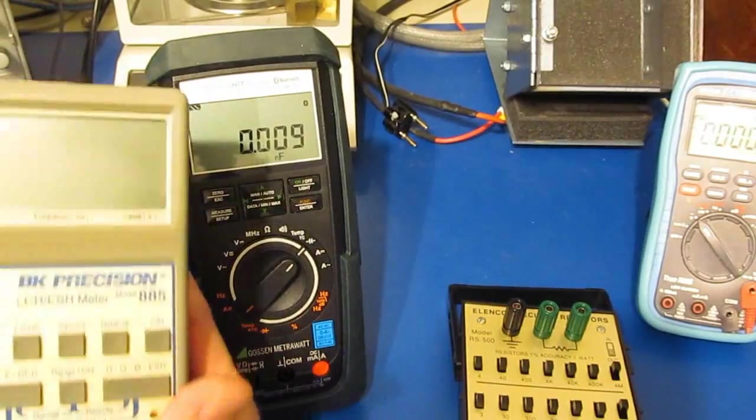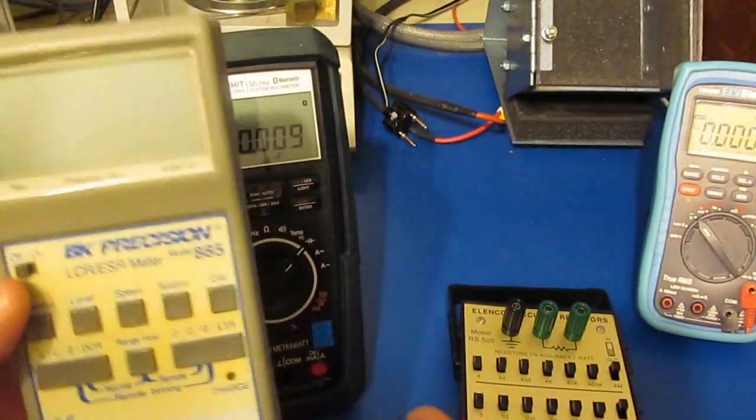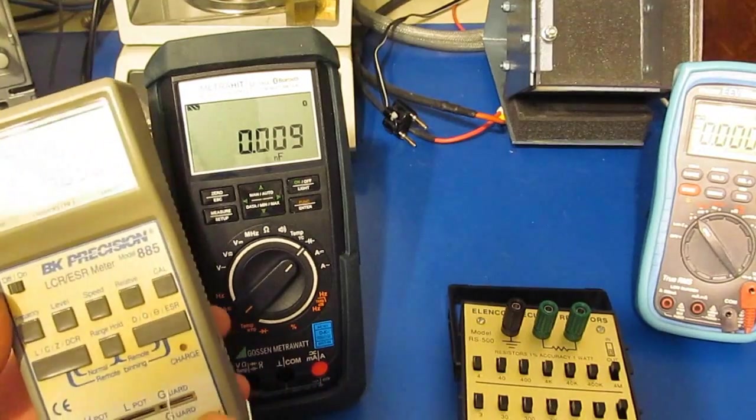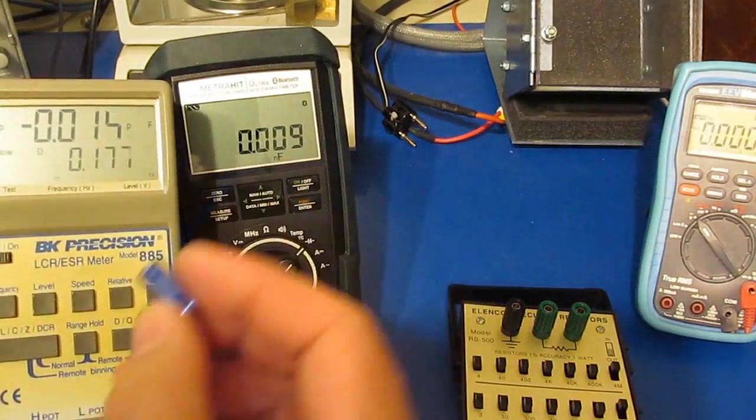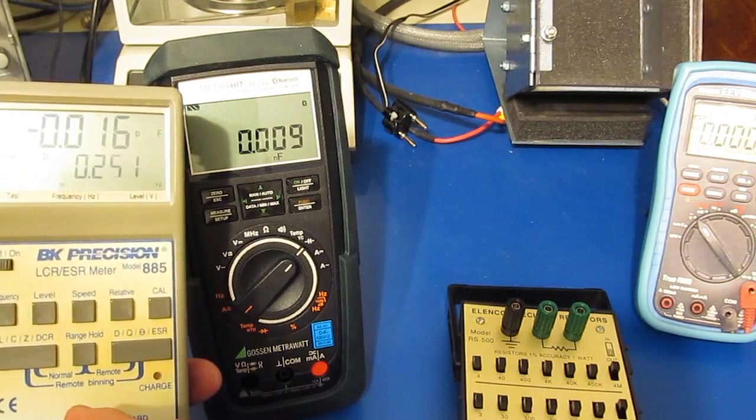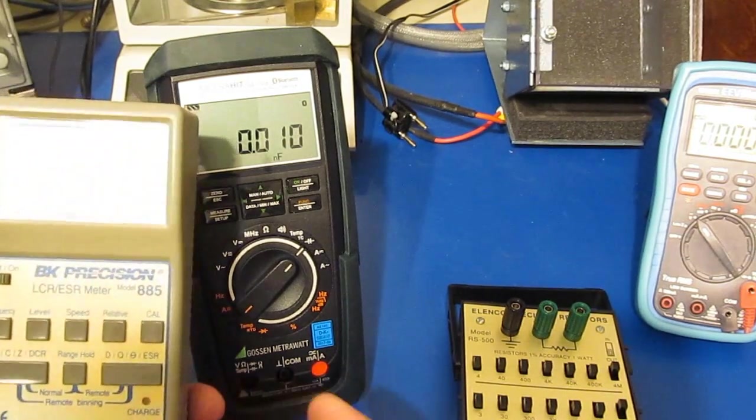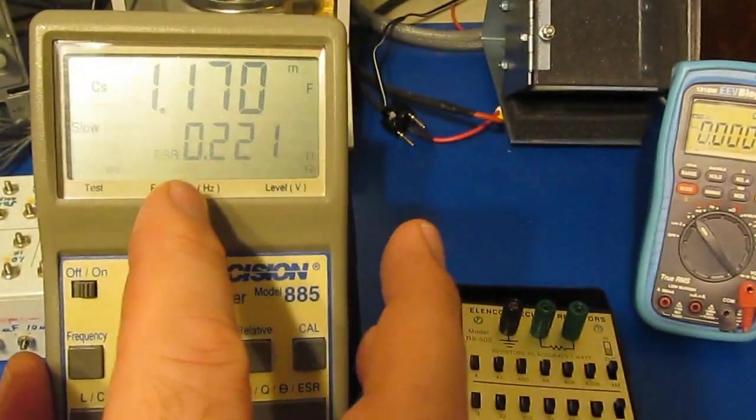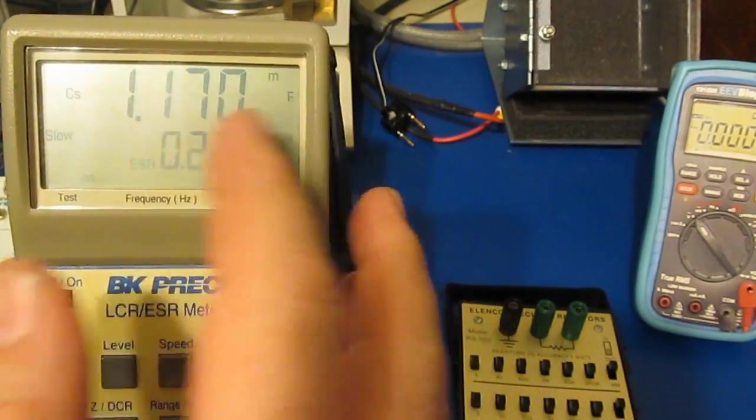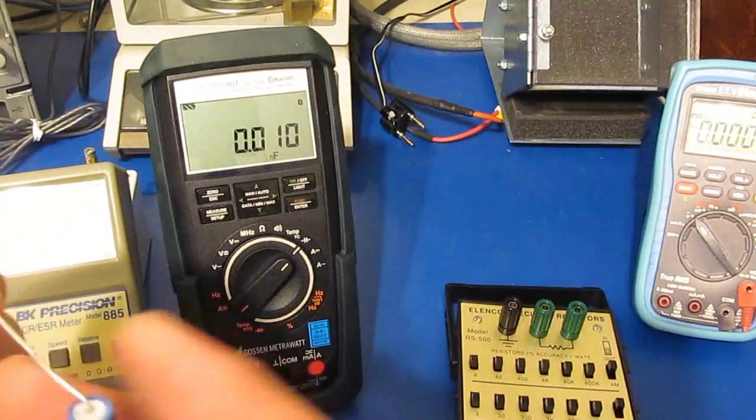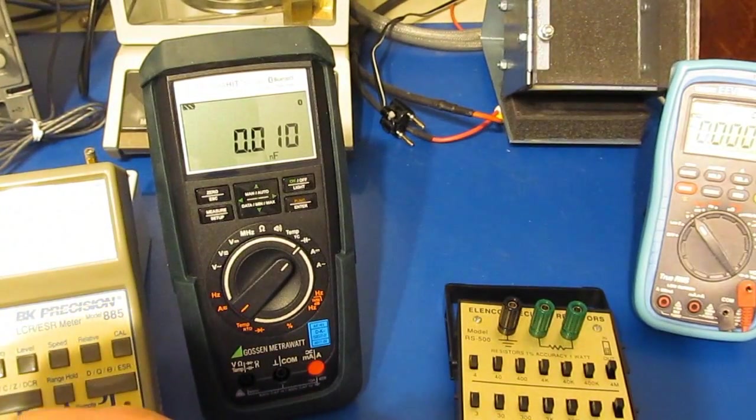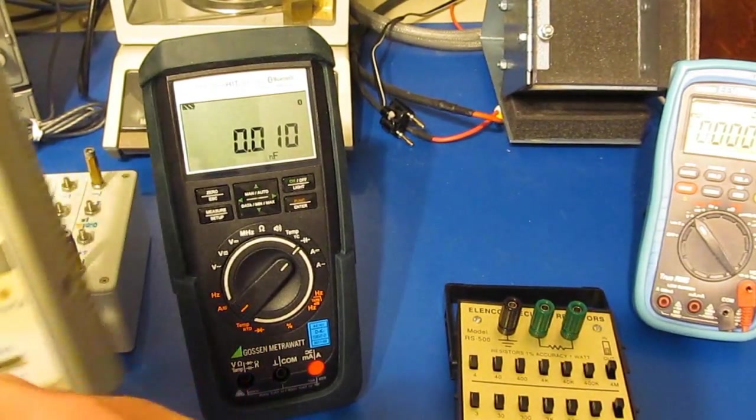I've got an RLC meter here, this is made by BK. I actually just repaired this meter recently. I've got a thousand microfarad capacitor, I'm just going to install this. You can see it's reading 1.17 millifarads. What I have here is a 10 ohm resistor, so we're just going to simulate a high ESR value of 10 ohms.